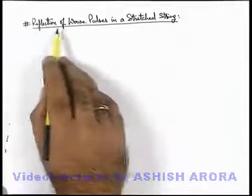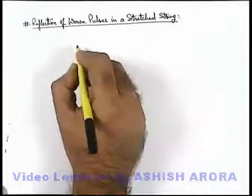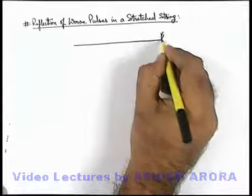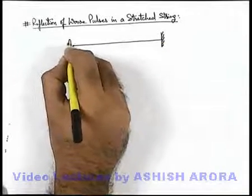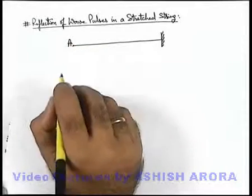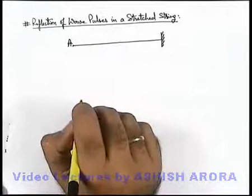Let's discuss reflection of wave pulses in a stretched string. Say if we are given a string which is clamped at one end on a wall, and this end we oscillate or give a jerk half oscillation to it. It produces one half of wave pulse which propagates in the string.